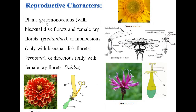Regarding reproductive characters, plants may be gynomonoecious — with bisexual disc florets and female ray florets present in the same inflorescence, as in Helianthus and Dahlia. Or monoecious — only bisexual disc florets present, as in Vernonia. Or dioecious — only female ray florets, where male plant and female plant are separate, also observed in Dahlia.